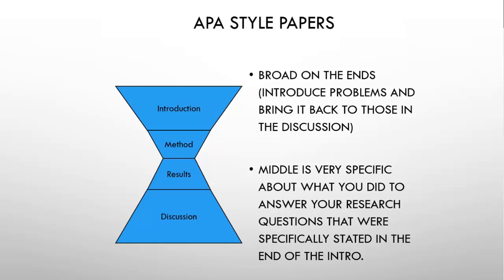Your discussion section should always start with a summary of what you said in your results section. As I was told as an undergraduate: if you don't understand the statistics yet, just skip it — you should be able to get the information from the results section in the first paragraph of the discussion. Always start your discussion section with a summary of what you found. For example: 'Students who commute more than 50 miles to school tend to have worse grades than students that live on campus.' A no-numbers summary should always start your discussion.